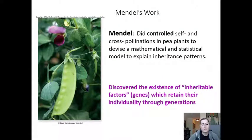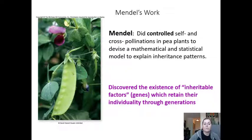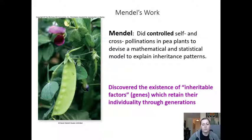What Mendel did was controlled self-pollinations and cross-pollinations of pea plants, and was able to devise mathematical and statistical models which explain the patterns of inheritance. Through these experiments, he discovered the existence of what he called inheritable factors, which we now know are genes. These genes are able to retain their individuality through generations, even though the offspring may not look exactly like the parents.